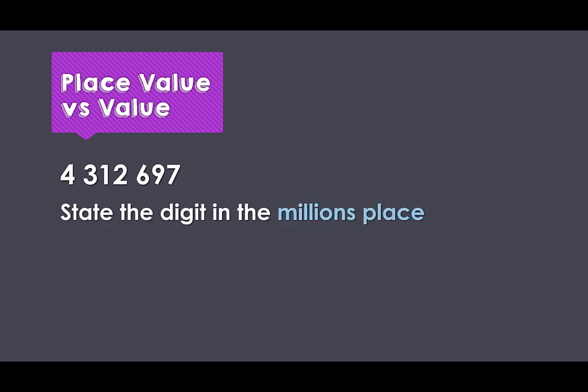Let's have a look at these definitions in action. Here we have four million, three hundred and twelve thousand, six hundred and ninety-seven. State the digit in the millions place. First, we need to locate where the millions place is. This is easy because the space is within our number — we can see our groupings of three and the four sitting out on its own. This means that the four is in the millions place. It is the seventh place value column moving from right to left.